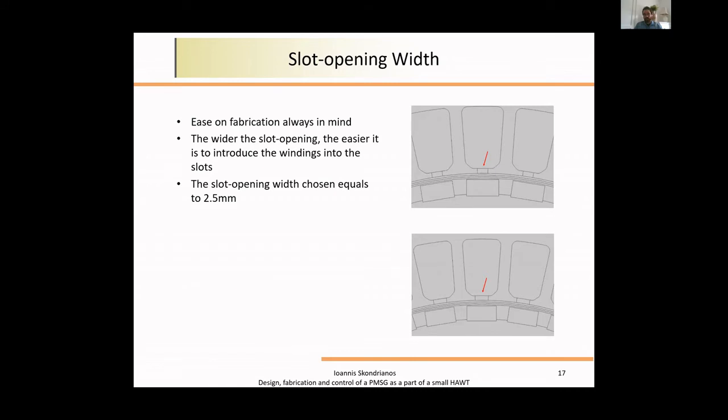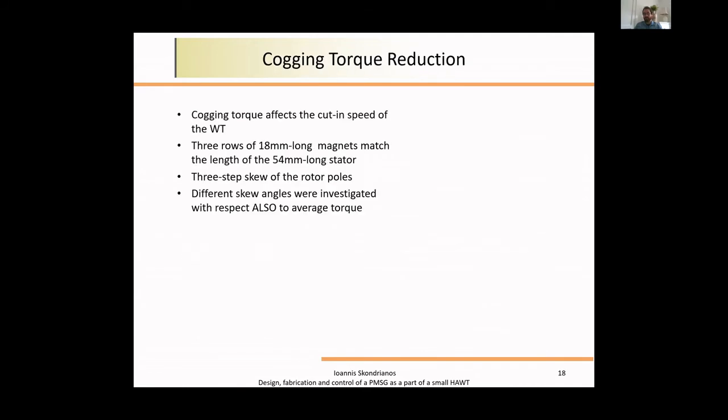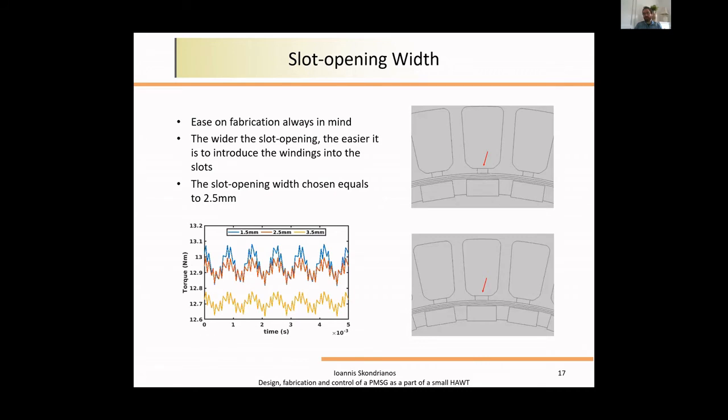One more thing tested was variation in slot opening width. We always have to keep in mind the machine was handmade—I'll say that many times. One criterion was ease in fabrication. The more the slot opening width, the easier to insert the windings by hand into each slot. But the more the slot opening width, the less torque we get. So we had to do a trade-off here to find the best solution.